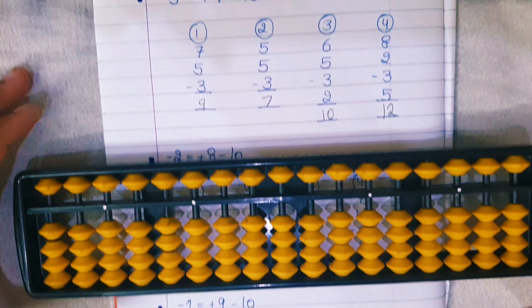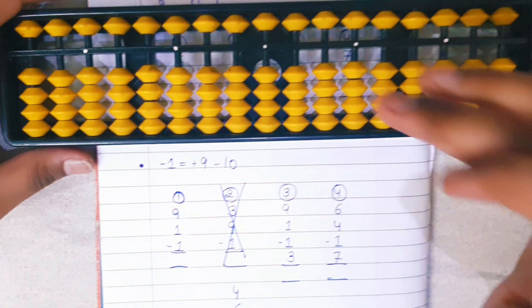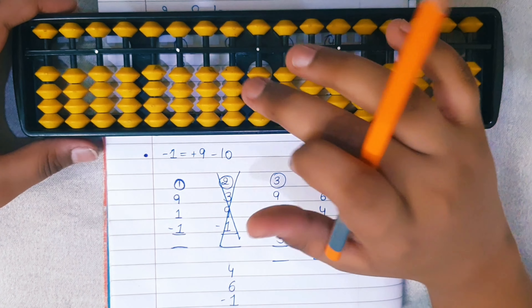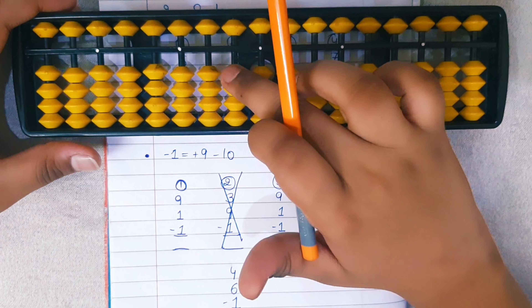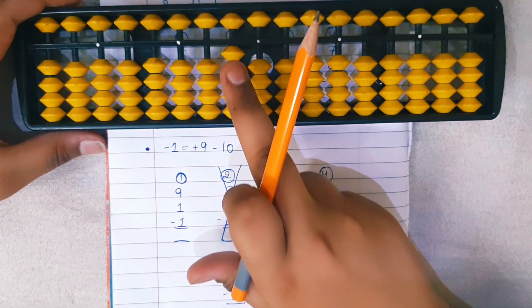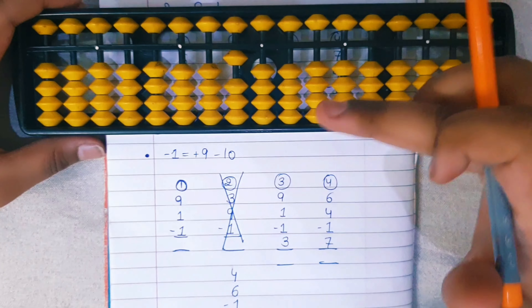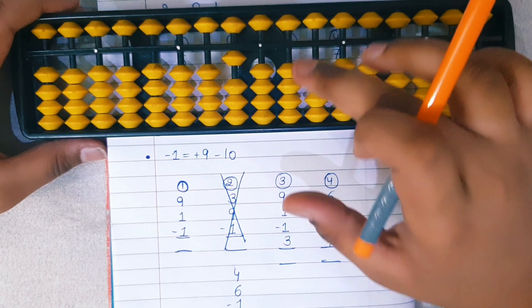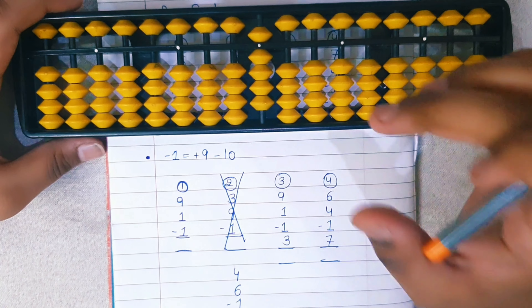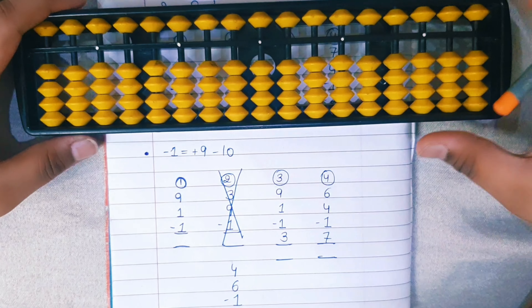Now we will do the minus 1 formula. The formula of minus 1 is: plus 9 minus 10. If we have 10 on the rod and we need to do minus 1, we apply the formula plus 9 minus 10.